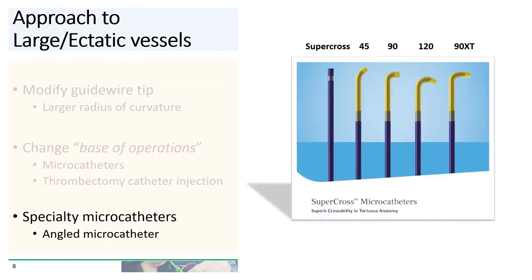Another option is to reach for specialty microcatheters. An angled microcatheter, like the Supercross line of microcatheters, can be very useful. A Venture catheter, which is a microcatheter with an adjustable tip, could potentially be useful as well.